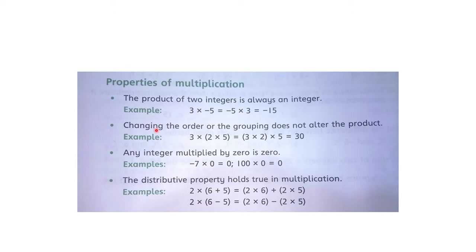The second property is: changing the order or the grouping does not alter the product. For example, 2 × 5 = 10, then 10 × 3 = 30. Alternatively, 3 × 2 = 6, and 6 × 5 = 30.